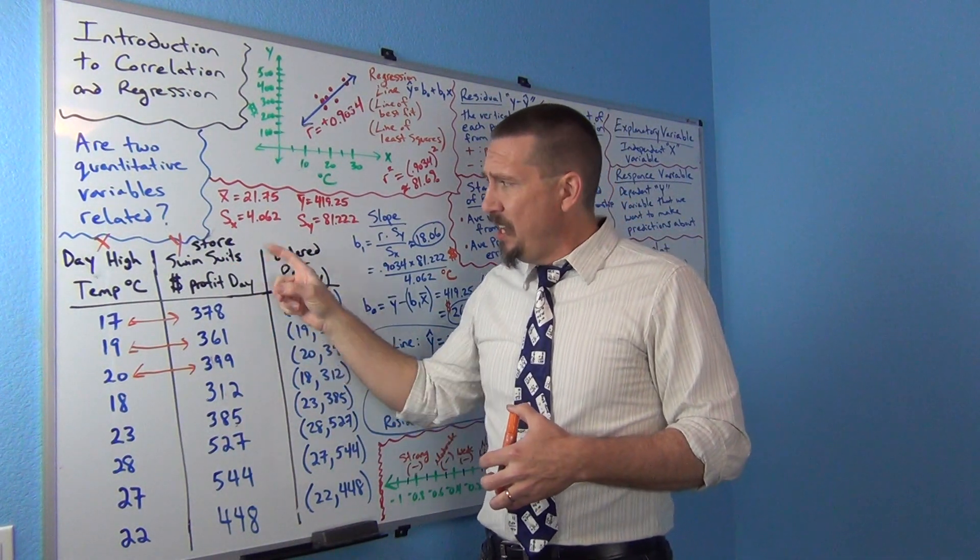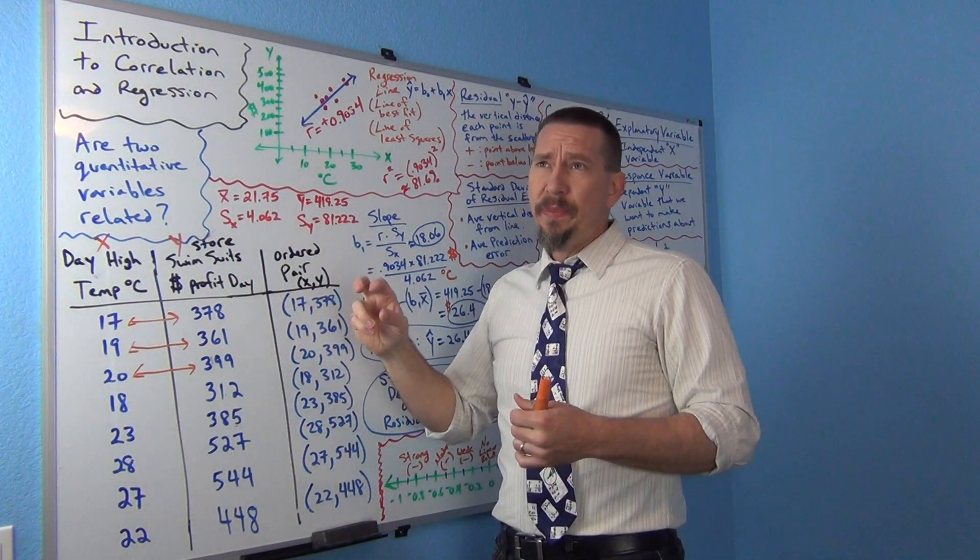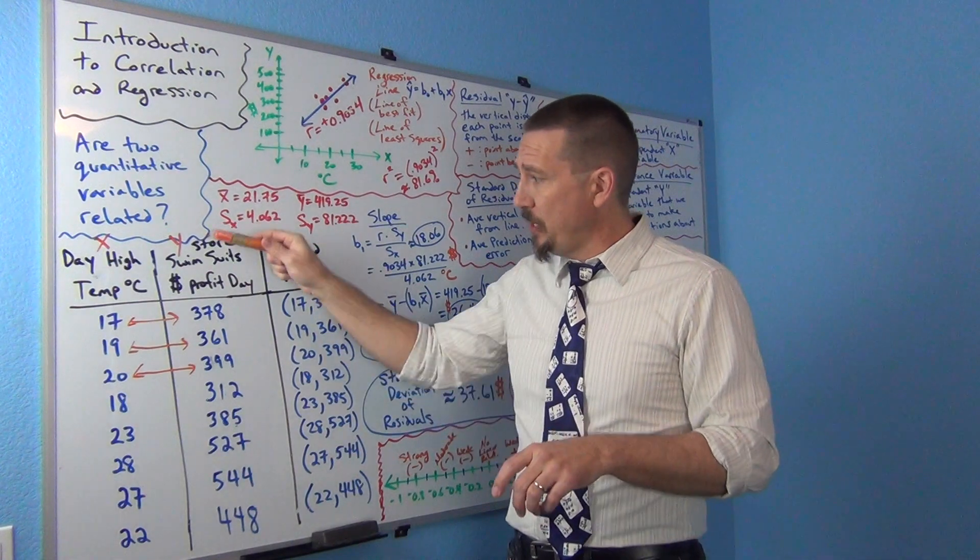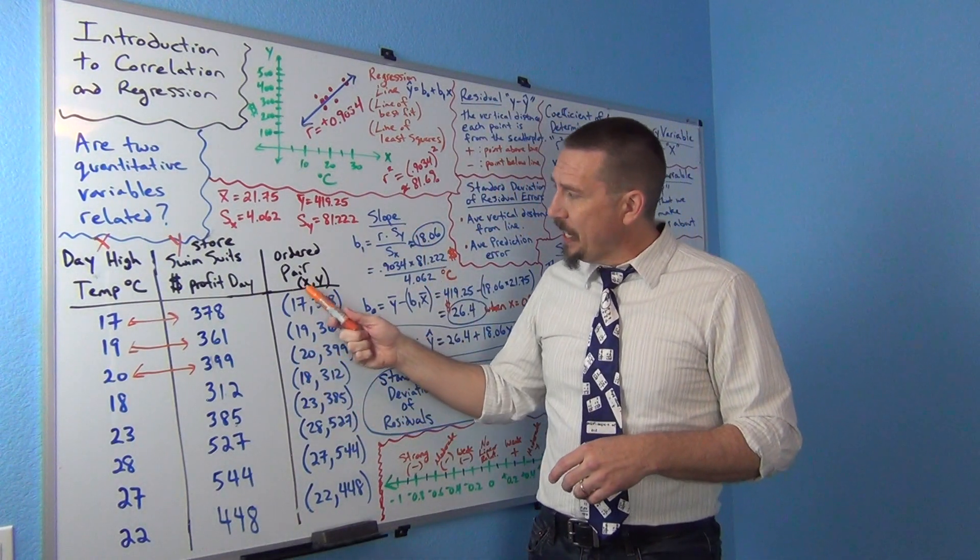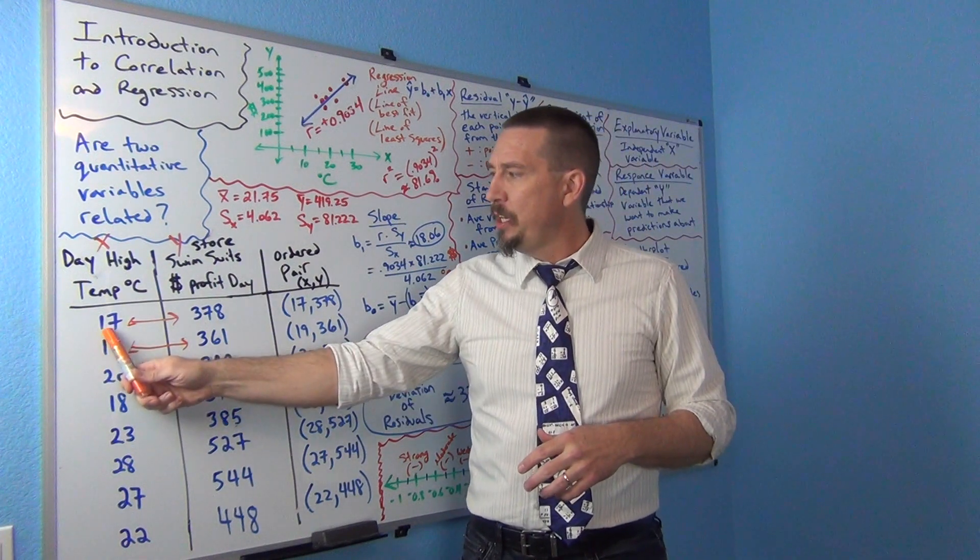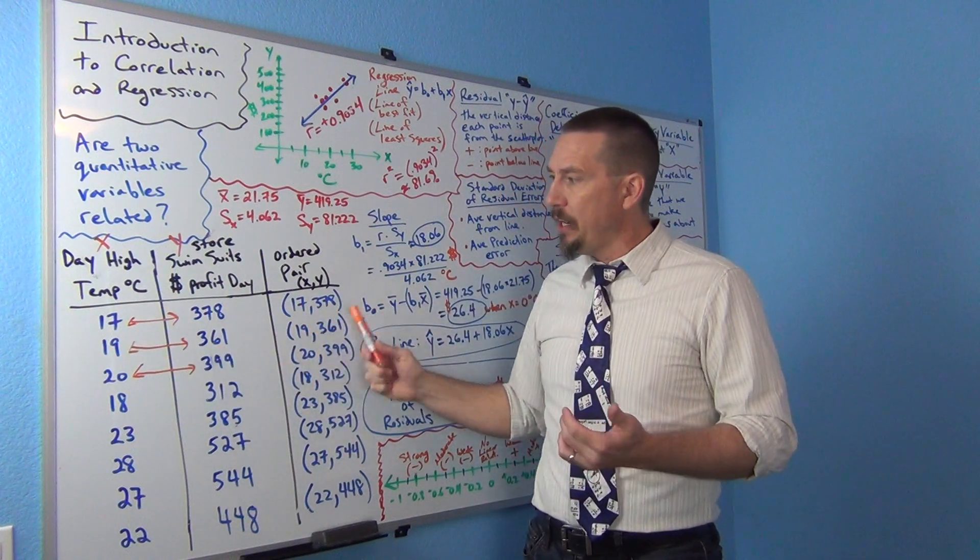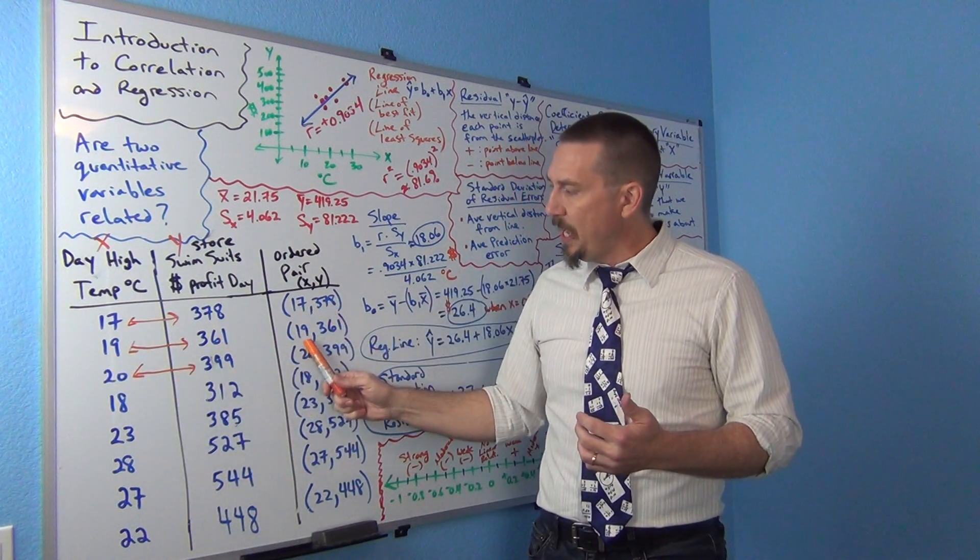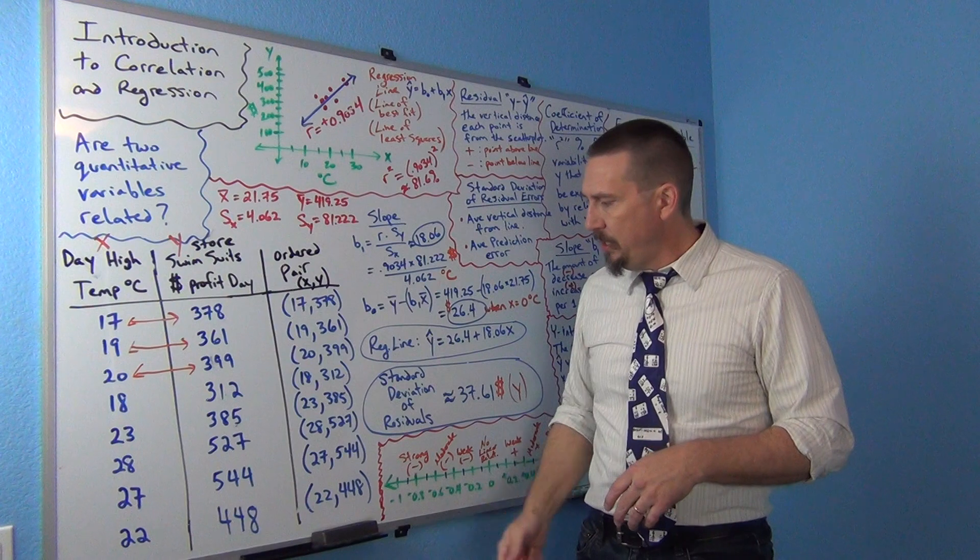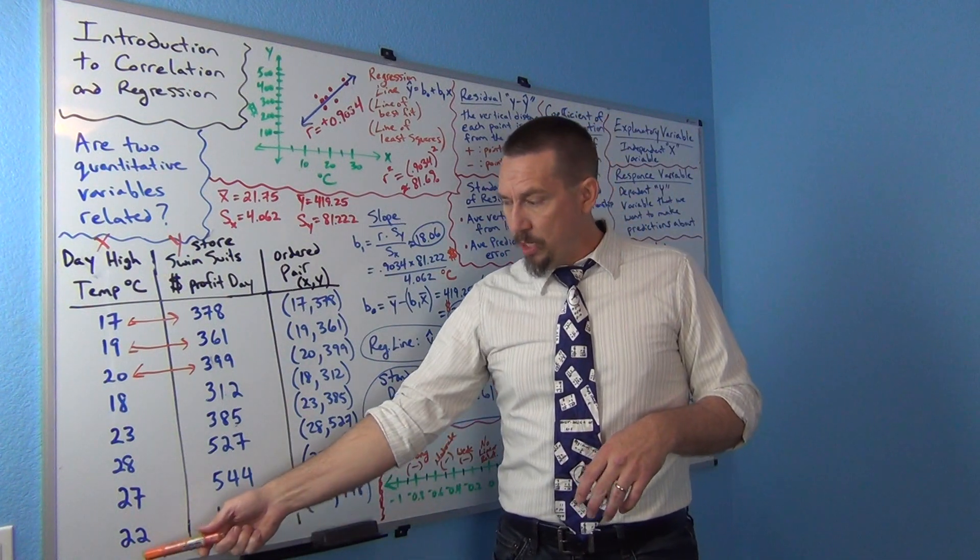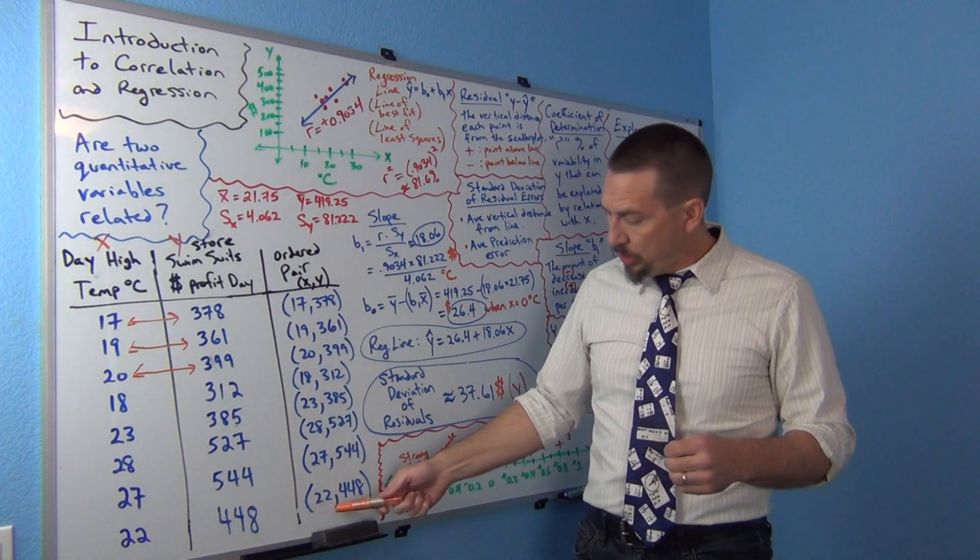In correlation and regression studies, y is always the focus variable. A lot of the calculations are based on the y. So you want to make sure that whichever variable you're more interested in, especially predicting, you make that the y. Now once we do that, then we can create what we call ordered pairs. Kind of goes back to your algebra days - we can do an x, y. So the x number, comma, y number. So 17, 378 - that would be what we call the ordered pair. 19, 361. The first number is always the x, the second number is always the y. 20, 399, and so on. We can go down the list. The last one was 22, 448. So on this day, it was 22 degrees Celsius and their profits for that day were $448.